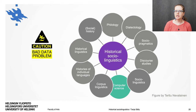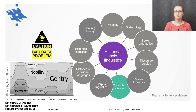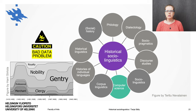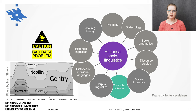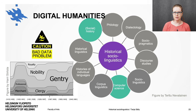This is because the data we use is quite challenging. Historical corpora that include information on the social background of the writers are typically relatively small and biased in a number of ways. The multidisciplinary collaboration between linguists, computer scientists, and sometimes historians as well, is what places historical social linguistics within the paradigm of the digital humanities.